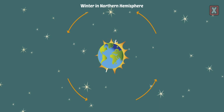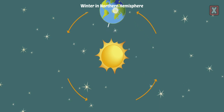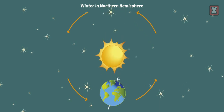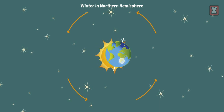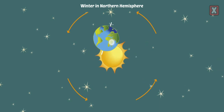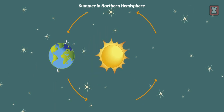Drag the Earth so that it is winter in the Northern Hemisphere. Correct — sunlight so it would be summer there.